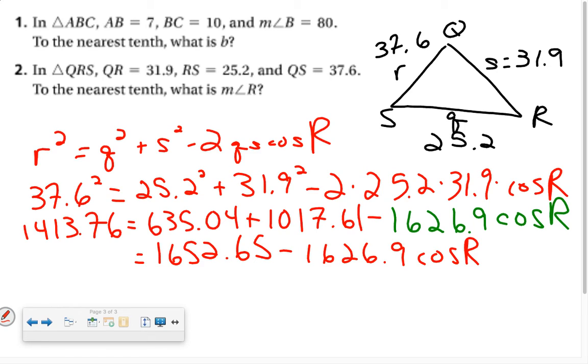Now I've got to get my variable by itself. Don't forget the algebra you already know. I'm trying to get R by itself. My next step is going to subtract this from both sides. So when I do that, I've got 1413.76 minus 1652.65. So negative 238.89 equals negative, be careful, 1626.9 times the cosine of R.